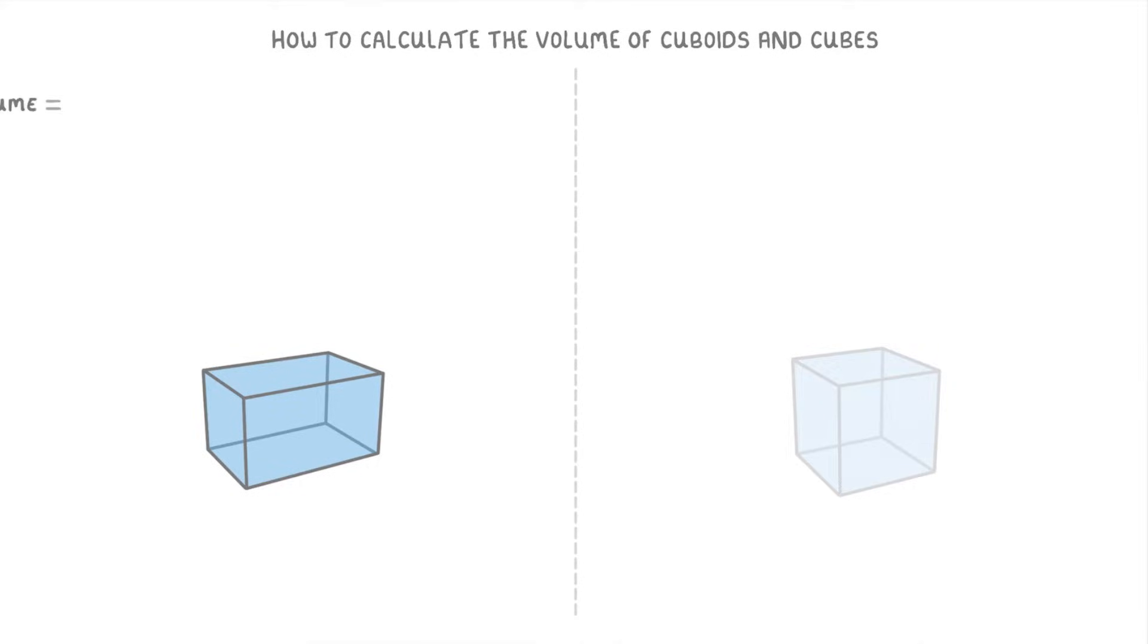For cuboids, the formula for volume is length times width times height, or in algebra that would be V equals L times W times H.